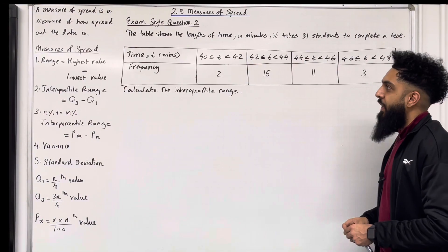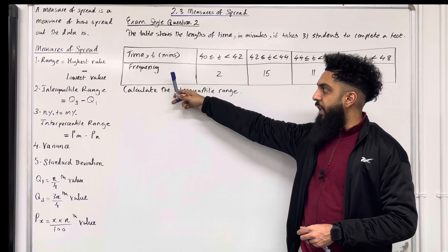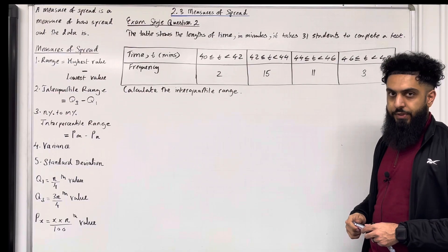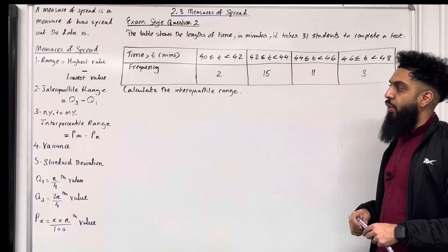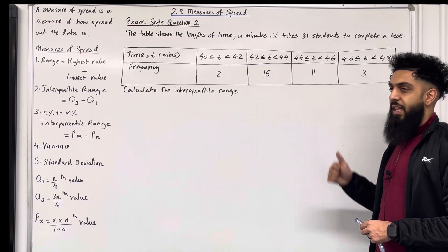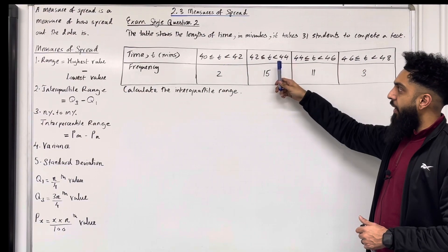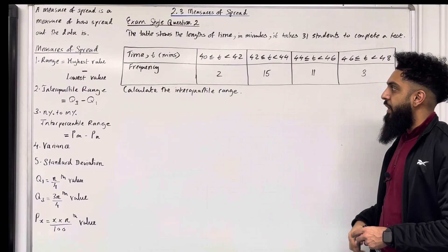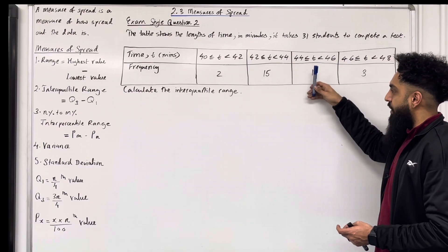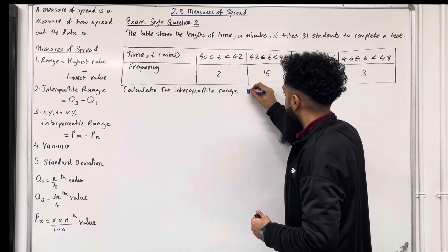Here is exam style question two. The table shows the length of time in minutes it takes 31 students to complete a test. We've got time and frequency. Calculate the interquartile range. Now over here we've got grouped data. Grouped data is continuous, so to work out the lower quartile and upper quartile, hence the interquartile range, we have to use linear interpolation. Before we do, we need to check if the data has gaps. Checking the class intervals, from first to second, second to third, and third to fourth — there are no gaps.